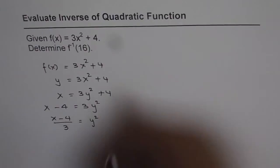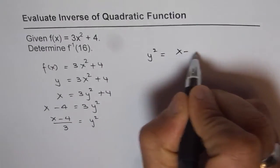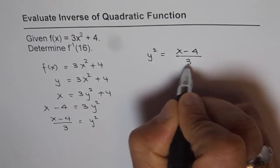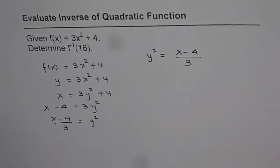Now after this, let me take it here. I am writing y² equals x minus 4 divided by 3. How will you get y from here? That is a big question. Of course, you will say square root it.